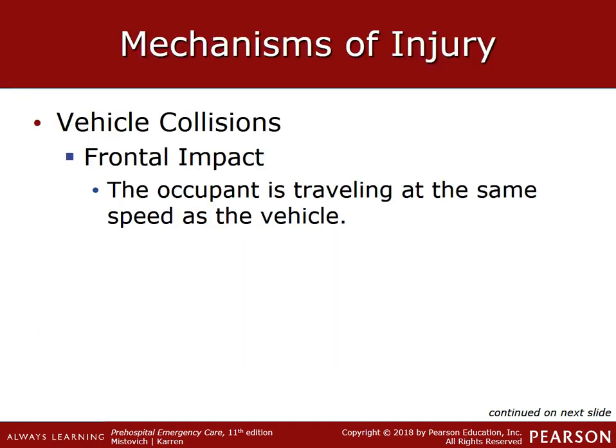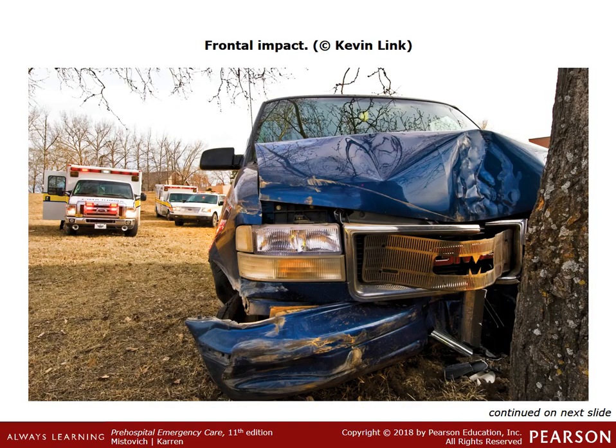In a frontal impact, the driver continues to move forward at the same speed the vehicle was traveling. If the vehicle is going 70 miles per hour and hits a tree, the human body is still traveling at 70 miles per hour when the vehicle stops, so it hits the steering wheel at 70 miles per hour. Ejection through the windshield can be extremely detrimental. Going under the steering wheel can cause injuries to the knees, femurs, hips, pelvis, and spine.